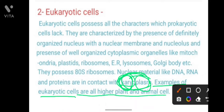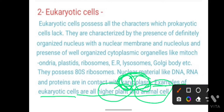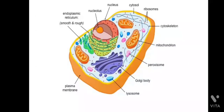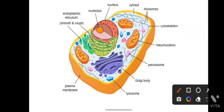Examples of eukaryotic cells are higher plant cells and animal cells. In these plants and animals, eukaryotic cells are present.